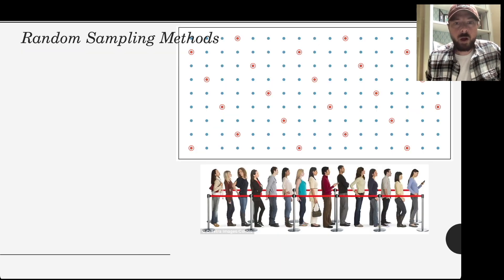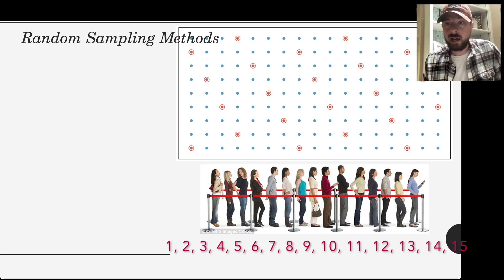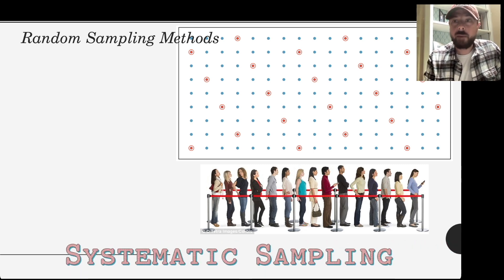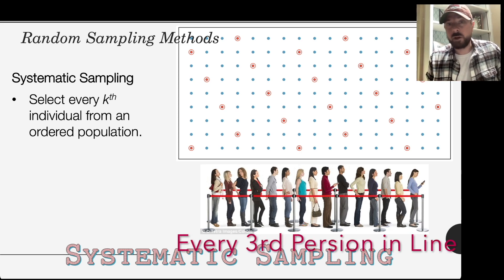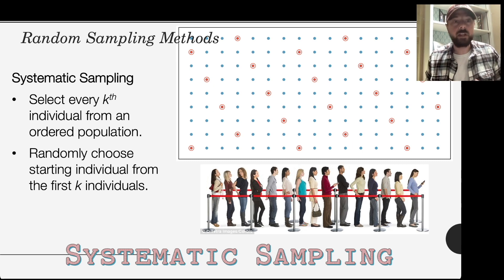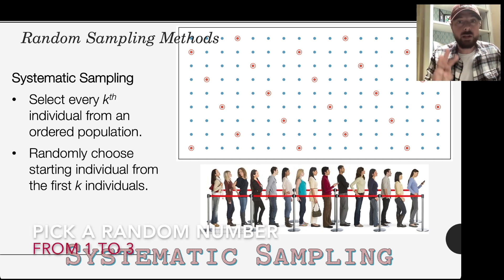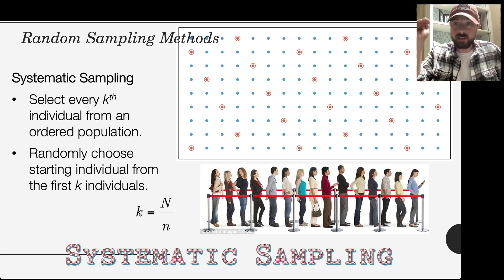Suppose we have a really well-ordered population — you can see here a bunch of people standing in line waiting for something. Another nice method would be systematic sampling. In systematic sampling, we use some type of pattern to select individuals in an ordered population — you might pick every third or every fifth person. The key, so that this is truly random, is that you must randomly choose the starting point within the first K individuals.